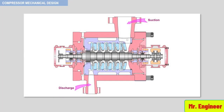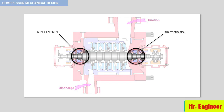In this cut section of a typical multistage vertically split centrifugal compressor, the shaft seals are located here. Compressor shaft seals perform the function of containing the process fluid by minimizing external leakage and directing the leakage to a safe location. The types of shaft seals used in compressor applications are shown in the following table.